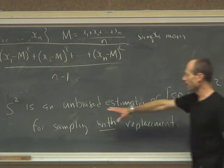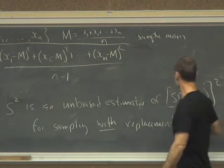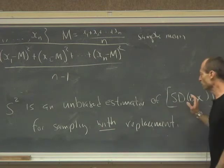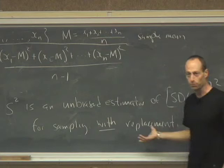So what does unbiased mean? It means that the expected value of this is equal to this. And that's true in a particular case. It's true if the sample is drawn with replacement.